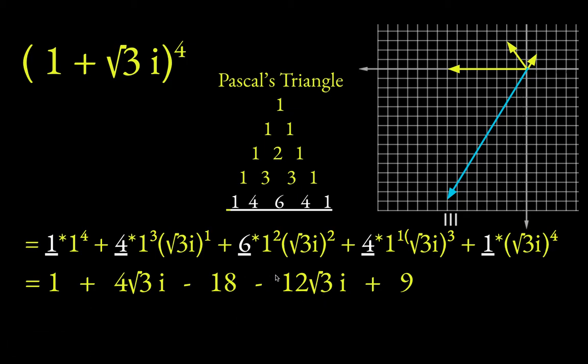Now you can see we've got 1 plus 9, but minus 18. That's going to be negative 8. And then you have 4 root 3 minus 12 root 3. So that's negative 8 root 3. So it double checks if you just multiply the thing out.